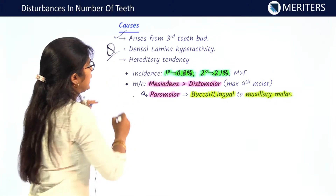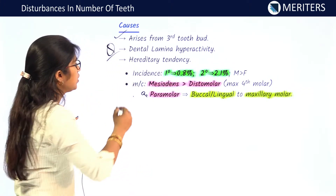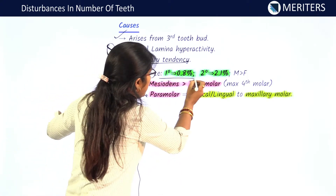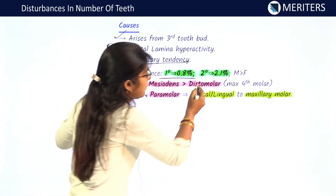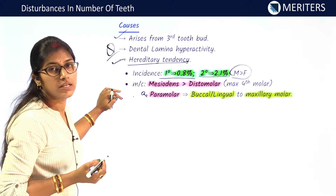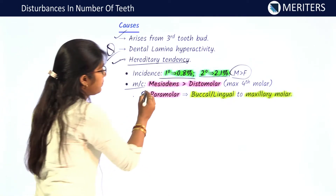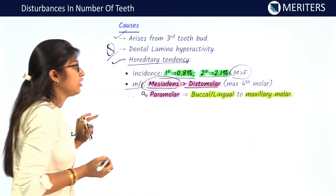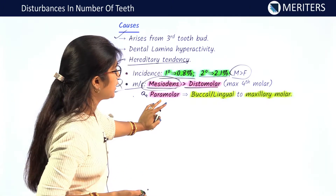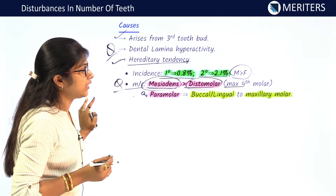Causes of supernumerary teeth: they arise from a third tooth bud, and dental lamina hyperactivity is very important — hyperactivity of the dental lamina can lead to formation of supernumerary teeth. There is also hereditary tendency. Incidence: in primary dentition it is 0.8 percent, in permanent dentition it is 2.1 percent, and incidence is more in males than females. The most common supernumerary teeth are mesiodens, followed by distomolars. Distomolar is the maxillary fourth molar.